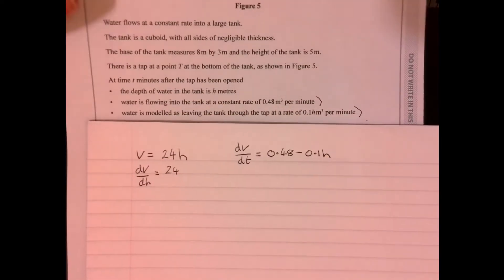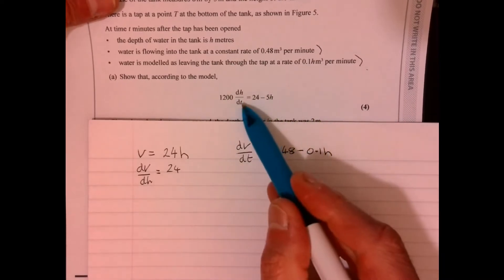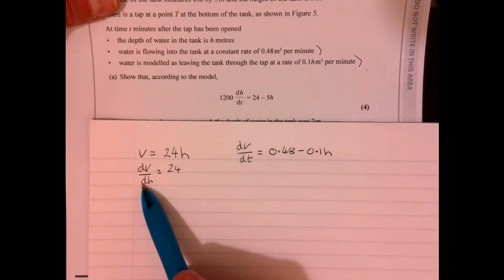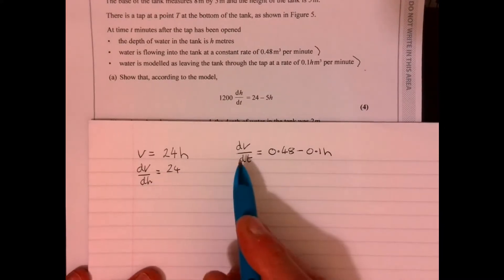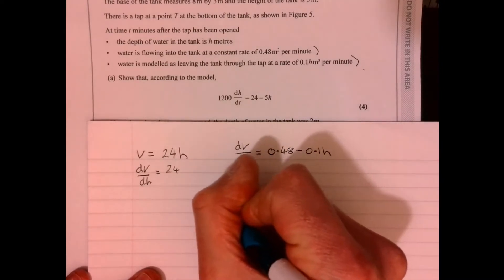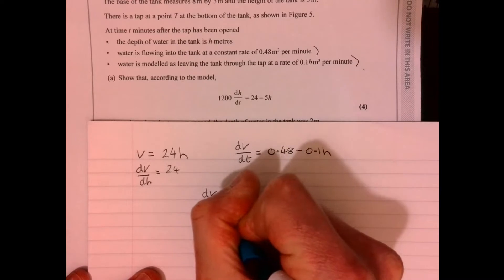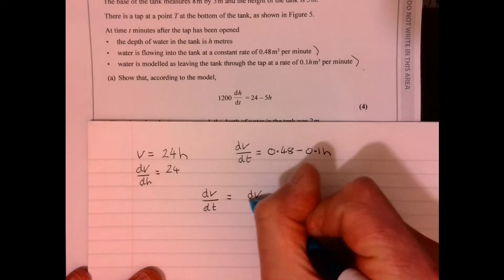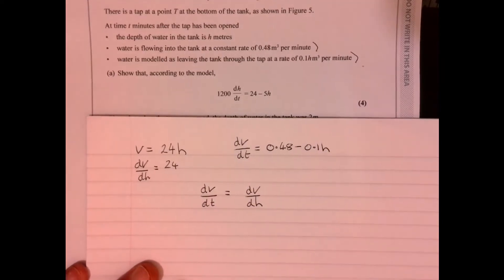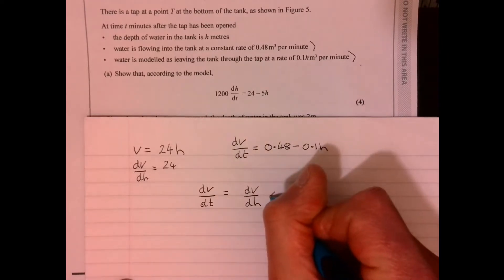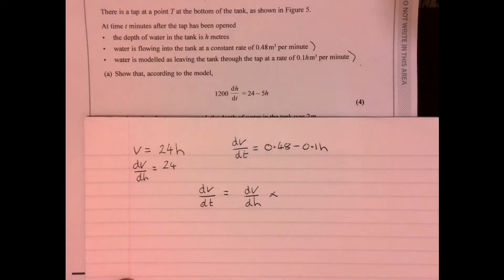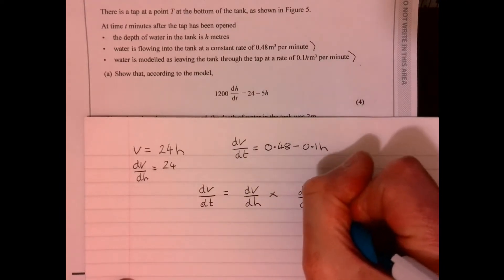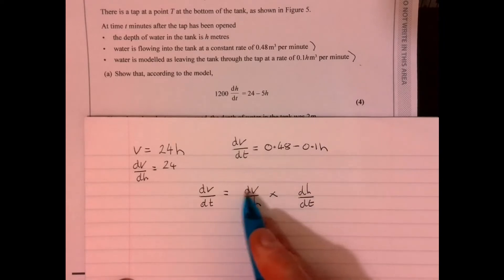Now let's think about what could we write down from here. dv over dh. Let's just get that confidence of just thinking, I'm not really sure what to do here. Let's just write down what we can. So that equals 24. Now, the next clue is really in where we're trying to get to. There's a dh dt there.